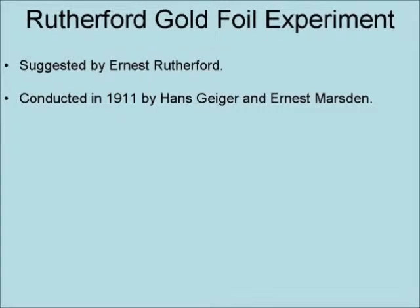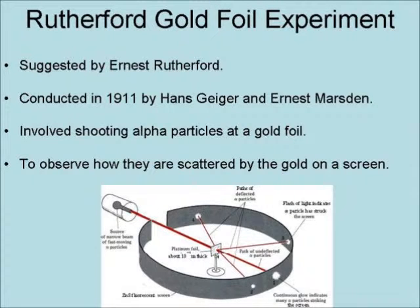The Rutherford Gold Foil Experiment was first suggested by Ernest Rutherford and conducted in 1911 by Hans Geigner and Ernest Marsden. The experiment involved shooting alpha particles at a gold foil to observe how they were scattered by the gold on a screen.